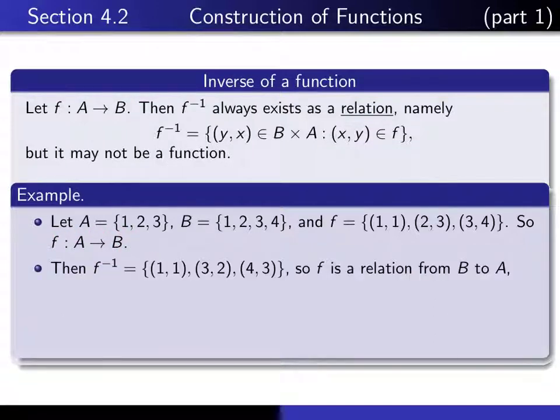By reversing the order of all the ordered pairs, we get f inverse, a relation from B to A. But it's not a function from B to A. Can you see what goes wrong that prevents it from being a function?